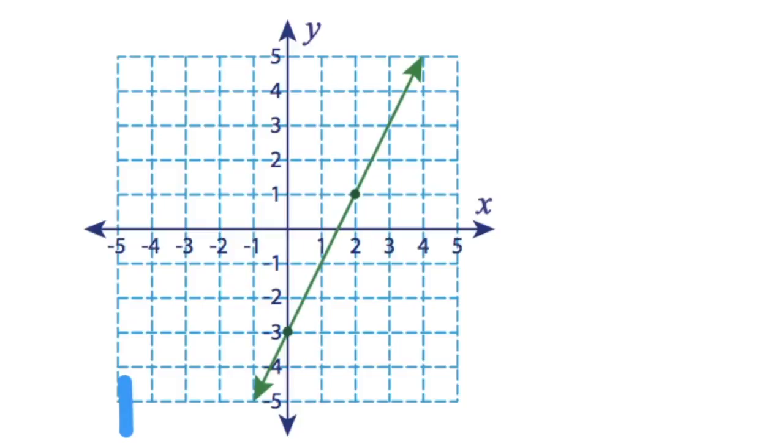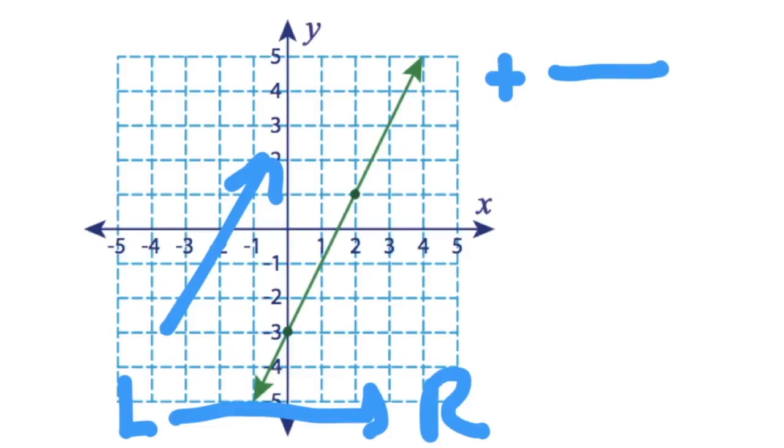If you want to find the slope of a line, always first decide if it's positive or negative. Start on the left, move to the right, and you can see that this line goes up. So the slope's going to be positive. And slope is always the rise over the run. So the vertical part over the horizontal part.